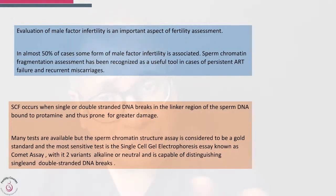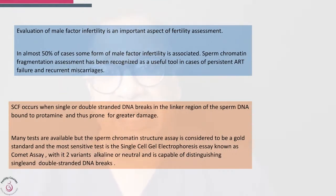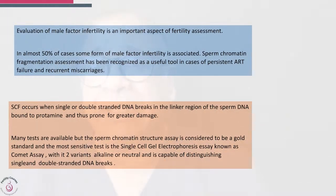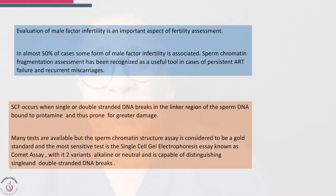In almost 50% of cases, some form of male factor infertility is associated. Sperm chromatin fragmentation — often called sperm DNA fragmentation assessment — has been recognized as an important tool in present assisted conception and in recurrent miscarriages.